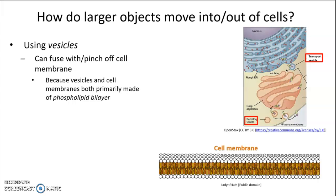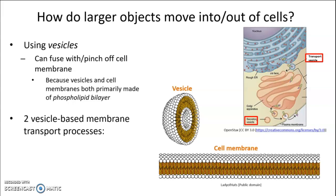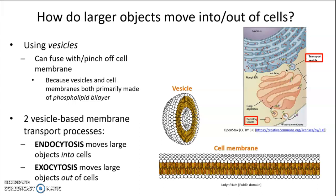Vesicles and cell membranes are made of the same thing — they're both primarily made of that double layer of phospholipids, the phospholipid bilayer. If you zoom in on a cell membrane, it's mostly this double layer of phospholipids, and a vesicle is the same thing: a smaller sphere with that same double layer, plus other things like proteins and maybe cholesterol embedded in it. There are two vesicle-based membrane transport processes: endocytosis, which moves large objects into cells, and exocytosis, which moves large objects out of cells.